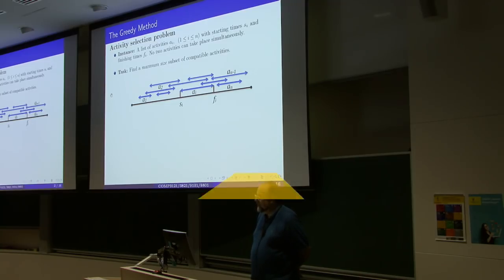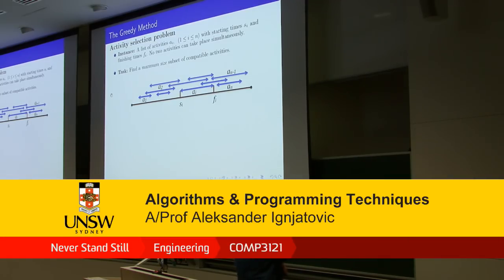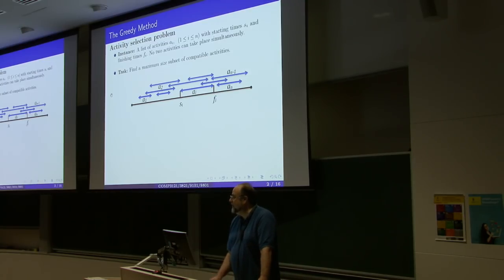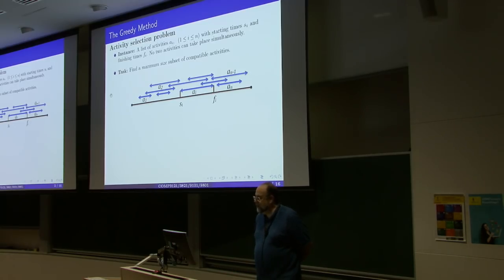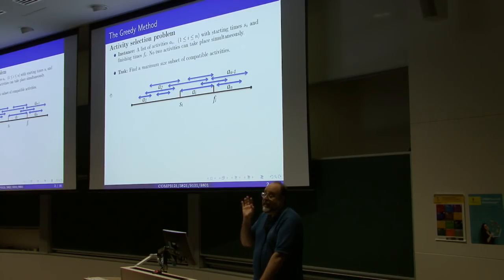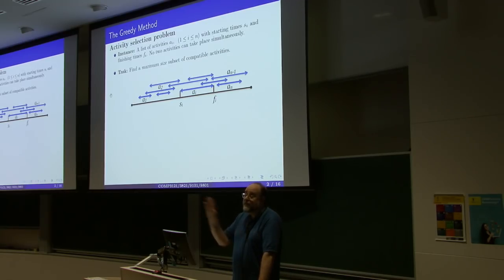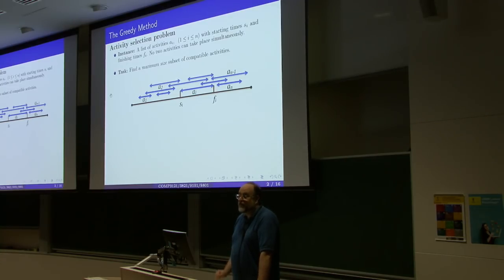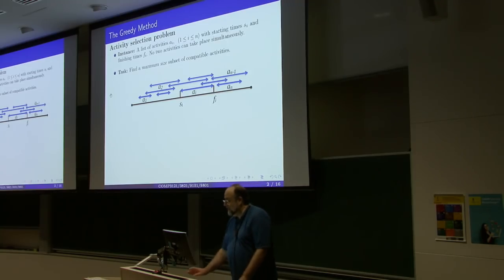We are moving to the greedy method, which is one of the most important methods in algorithm design that, despite its simplicity, can solve a remarkable number of practically important problems. The greedy method tries to make an optimal choice locally at every stage of the construction. It looks at the best move at each step and ignores what happens on a global scale. Sometimes this approach works, but sometimes we need a truly global approach, such as dynamic programming, which we will see a bit later.